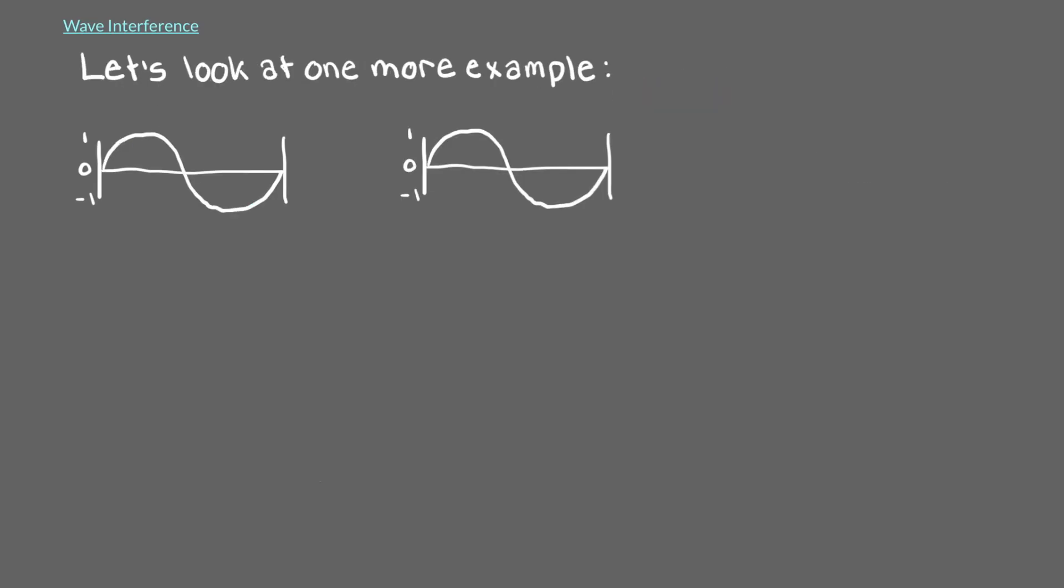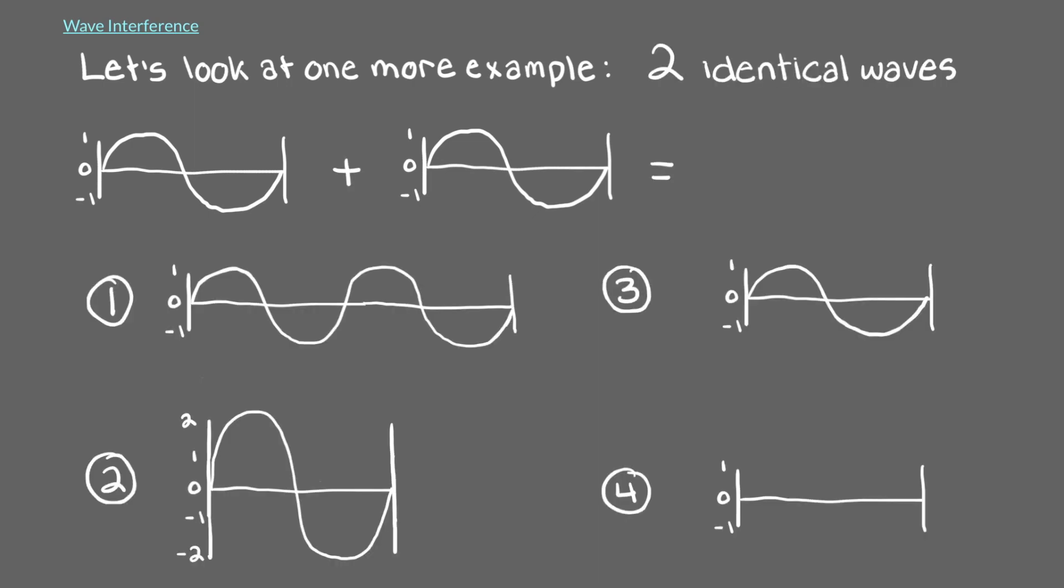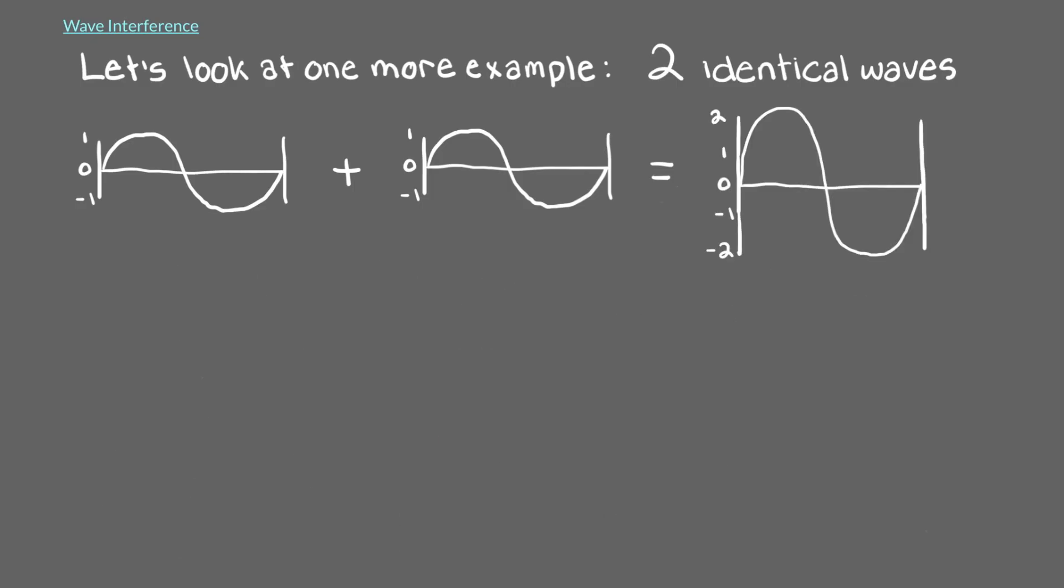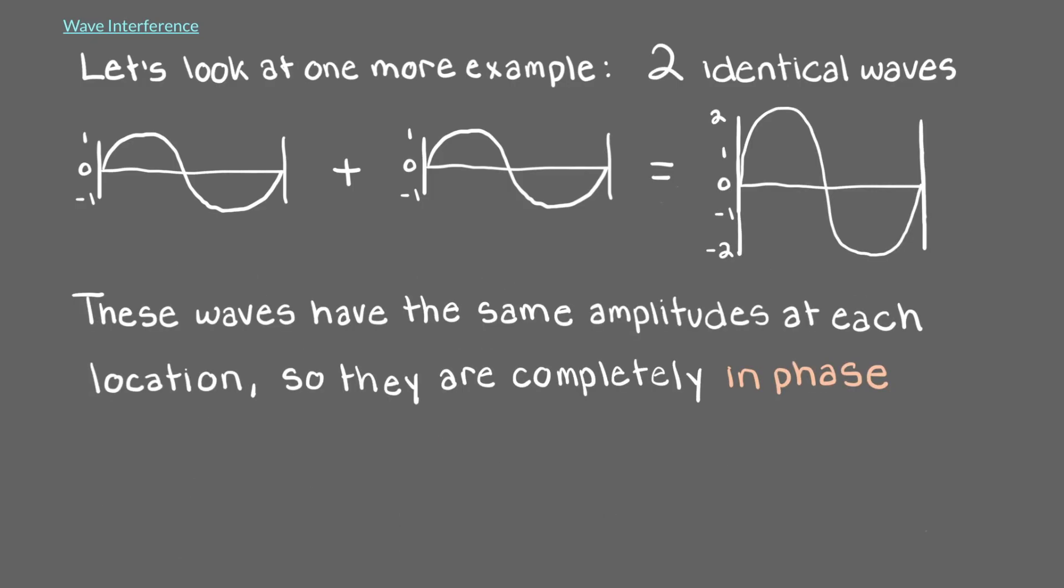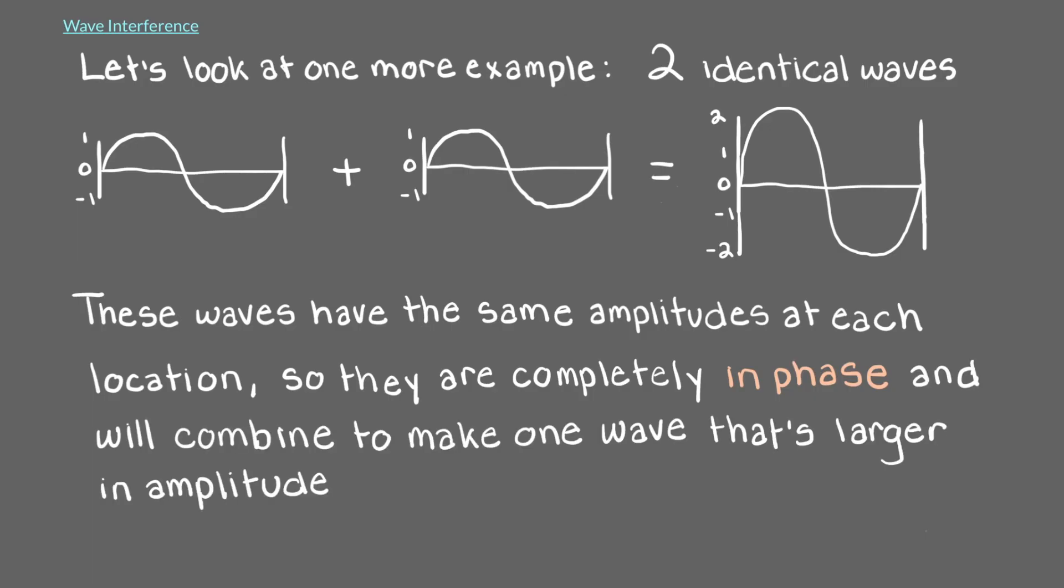Now, let's look at one more example. Here we have two identical waves. How do you think they will interact with each other? Right! These waves have the same amplitude at each location, so they are completely in phase. These waves will combine to make one wave that's larger in amplitude.